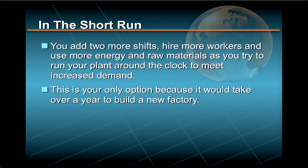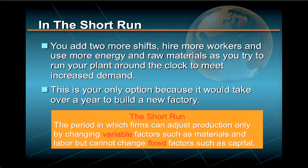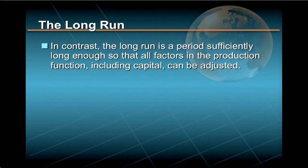In fact, in the short run, this is your only option, because it would take over a year to build a new factory. And that's the definition of the short run: the period in which firms can adjust production only by changing variable factors such as materials and labor, but cannot change fixed factors such as capital. In contrast, the long run is a period sufficiently long enough so that all factors in the production function, including capital, can be adjusted. In this case, it is the time it would take for you to expand your existing factory or build a new one.